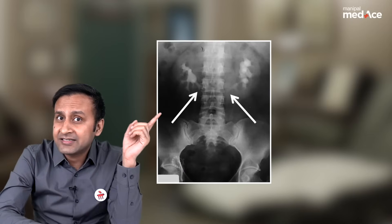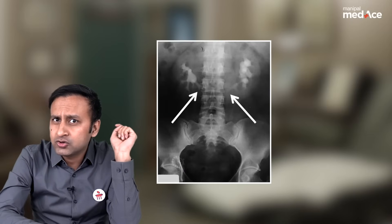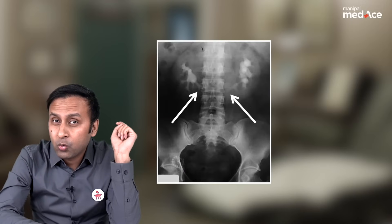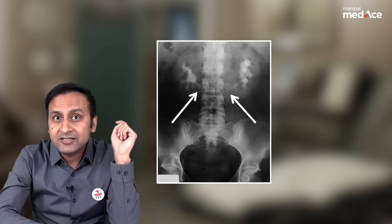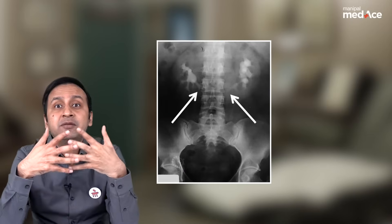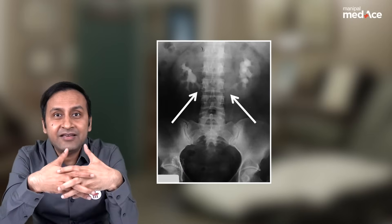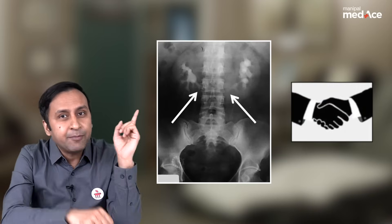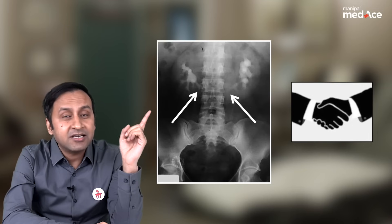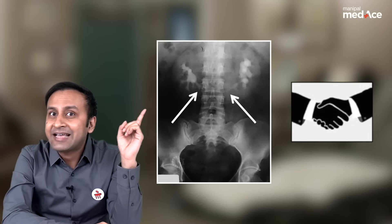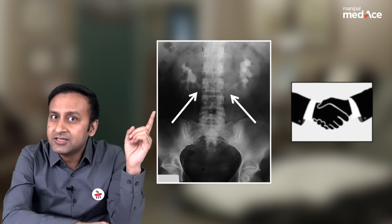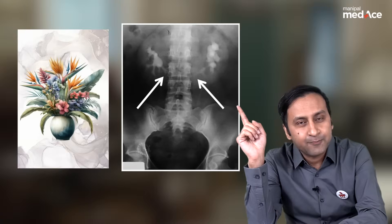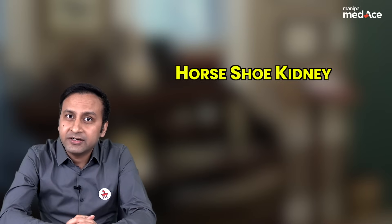Let us have a look at the calyces. Do these calyces look normal? No — these calyces appear to have been medially deviated in the form of a handshake. This appearance is also called handshake calyces or Pelvis calyces.